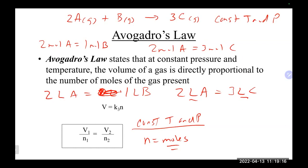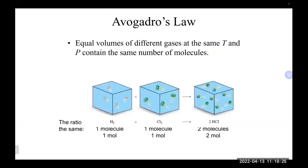For example: one liter of H2 gives one liter of Cl2 or two liters of HCl. We could do almost a stoichiometry relationship using volumes under constant pressure and temperature conditions. Volume in the calculation can be any unit, and moles must be in moles.